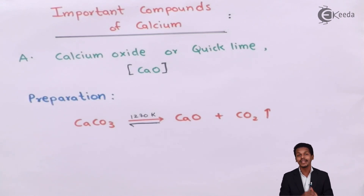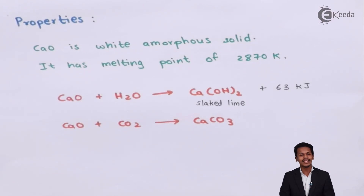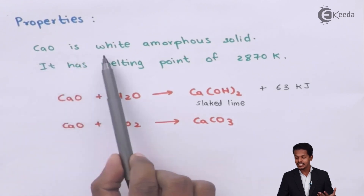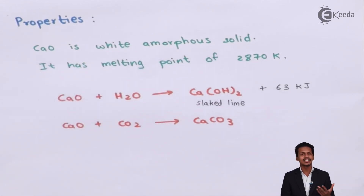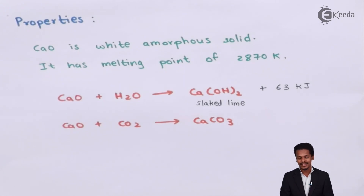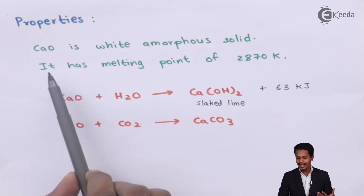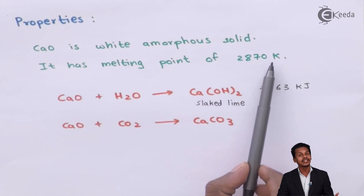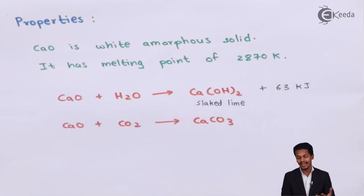Now let us move on to the properties of calcium oxide. Discussing the physical properties: calcium oxide is a white amorphous solid. Just as calcium carbonate is white, on decomposition we get calcium oxide, which is also white in color. It has a melting point of 2870 Kelvin — a very high melting point — which is why it remains in solid form under normal conditions.